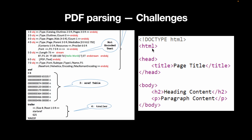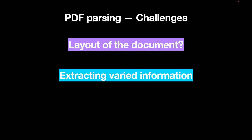While HTML documents are hierarchical representations — for example, we have a clearly defined title within a tag, headers wrapped in a tag, paragraphs wrapped in a tag, and the entire body wrapped in a tag — when it comes to PDFs, the underlying code looks uninterpretable. That's mainly because PDFs are not structured, and that's where the main challenge comes in. The first challenge is to identify the layout of the document, and the second is extracting varied information such as tables, figures, or text.